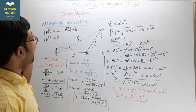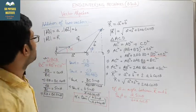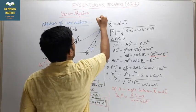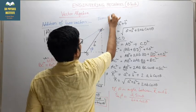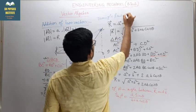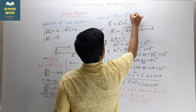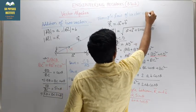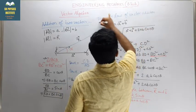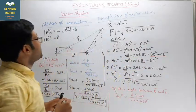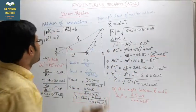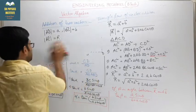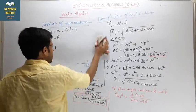So this is the triangle law of vector addition — the derivation of the resultant of the two vectors. Next, we consider the parallelogram law of vector addition.